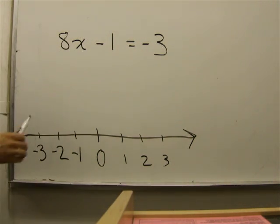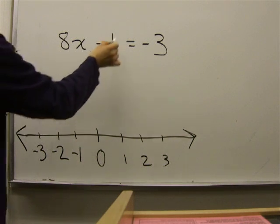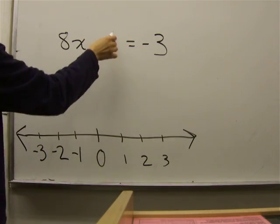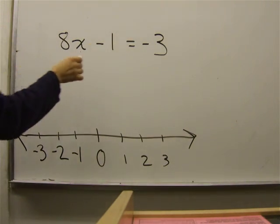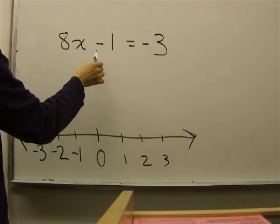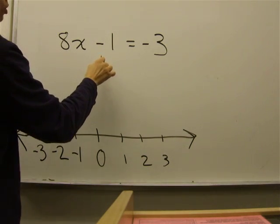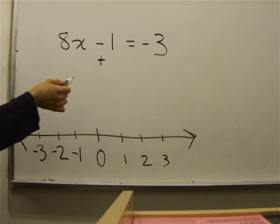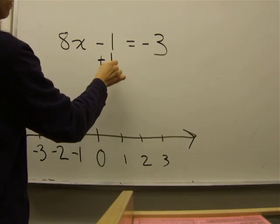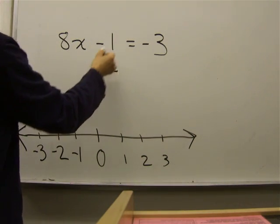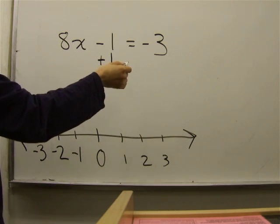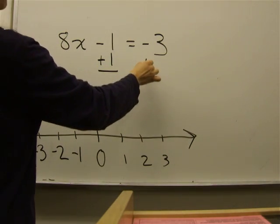To isolate the x, do the following. First look at this number. This is saying negative 1 or minus 1. The opposite of subtraction is addition or the opposite of a negative is a positive. Positive 1. What you do on one side of the equal, you must do to the other side of the equal. Positive 1.